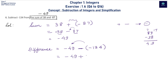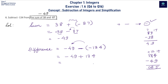Now -49 + 134: plus and minus is minus, so we subtract. 134 - 49: borrowing gives 85. Among 49 and 134, 134 is bigger and it is positive, so our answer is +85.